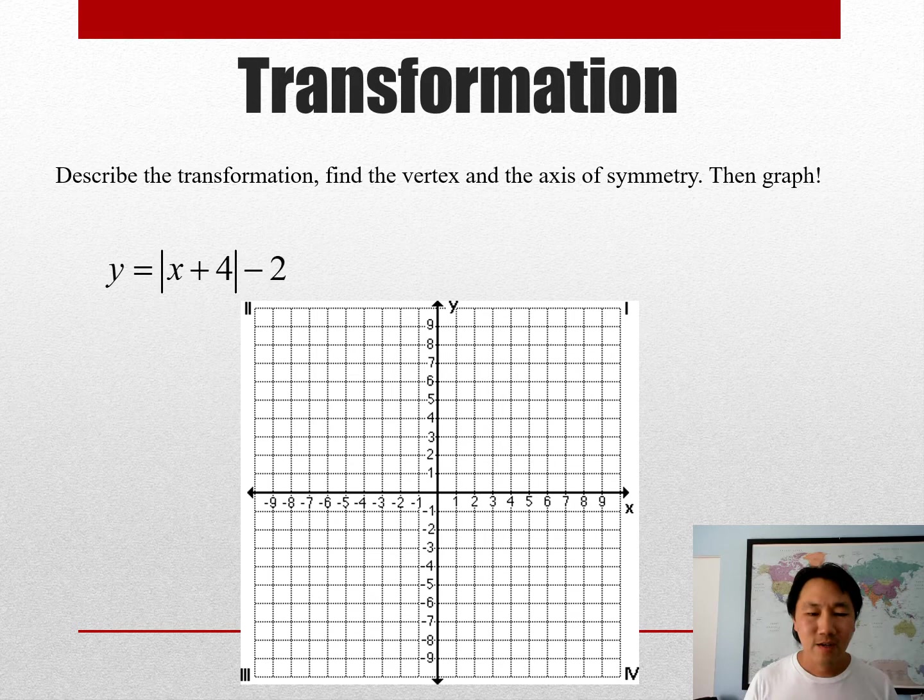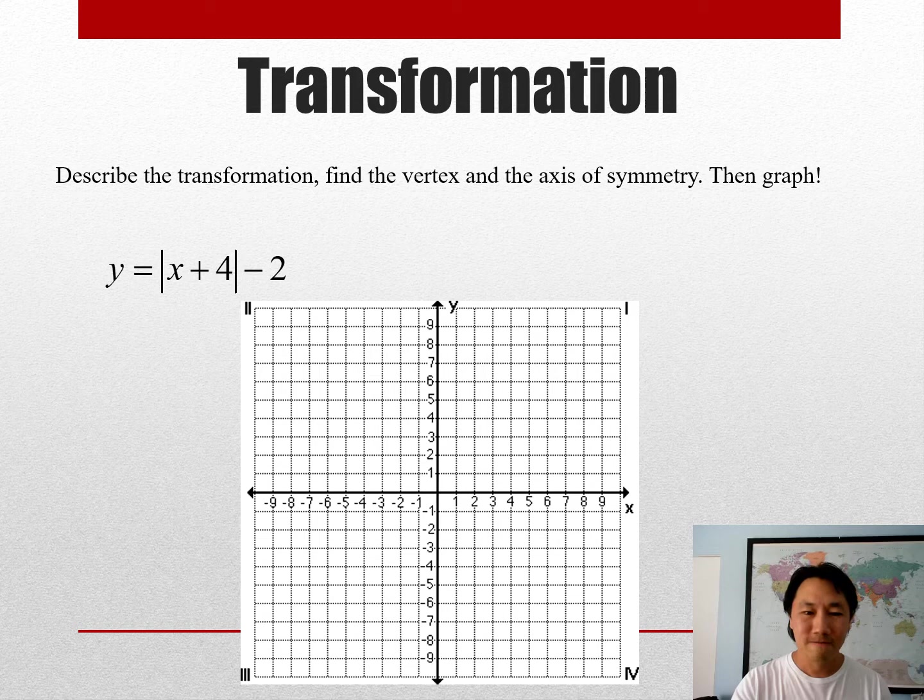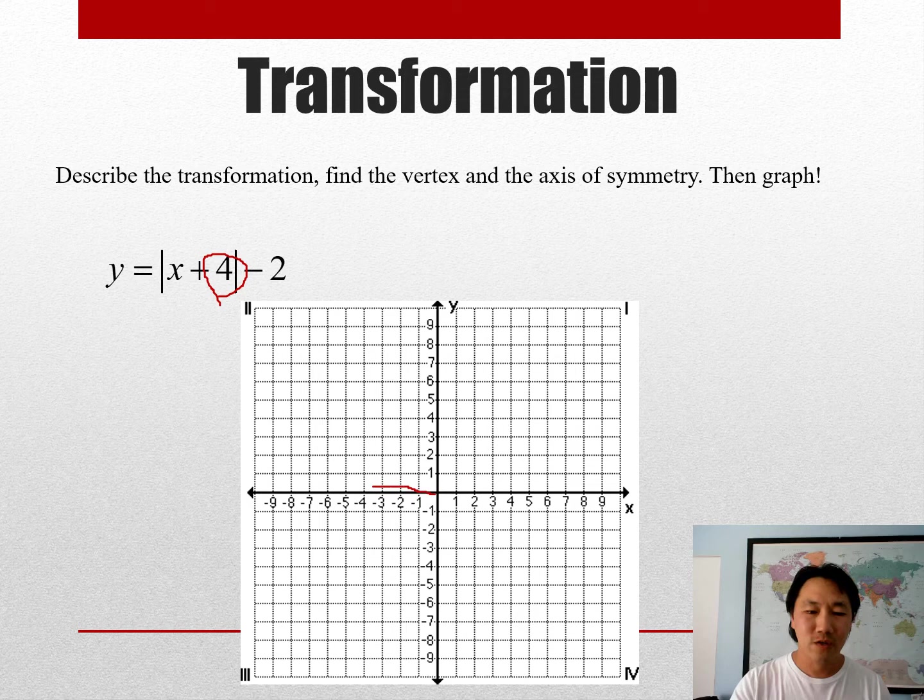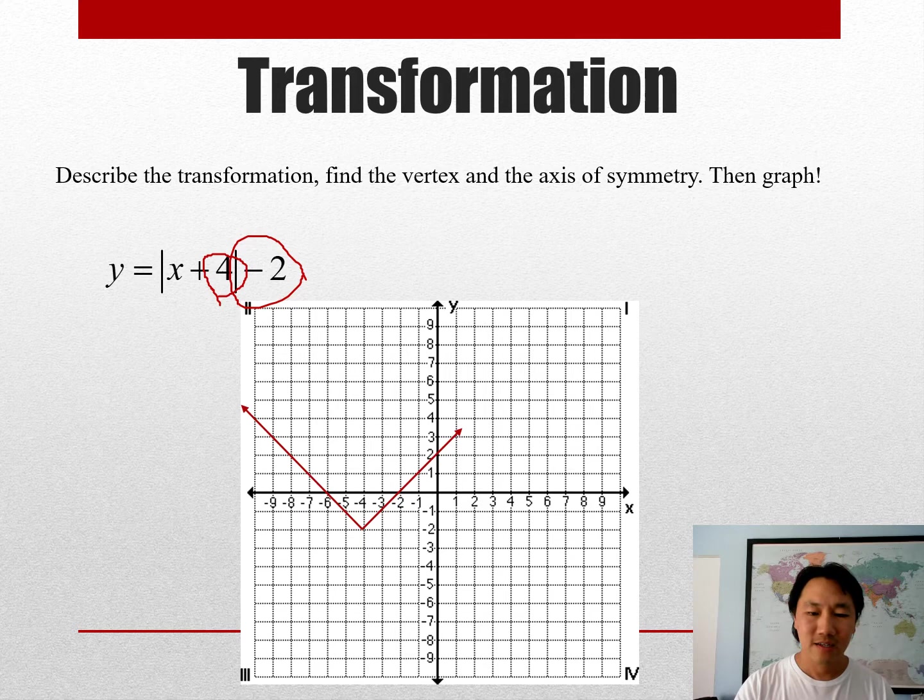Here's our first one: y is equal to the absolute value of x plus 4 minus 2. Okay, that plus 4 actually moves our parent graph four units to the left, and the minus 2 actually moves it two units down.